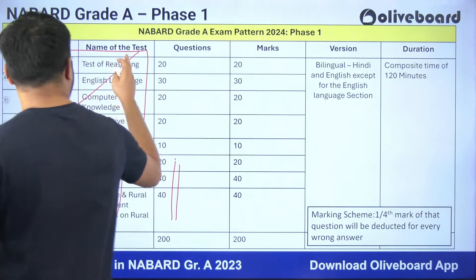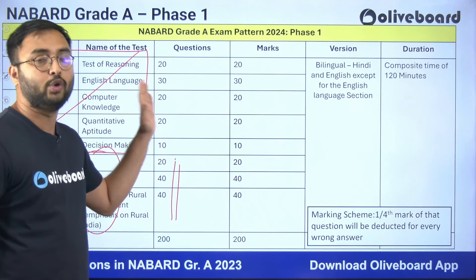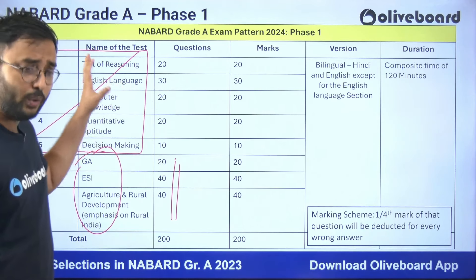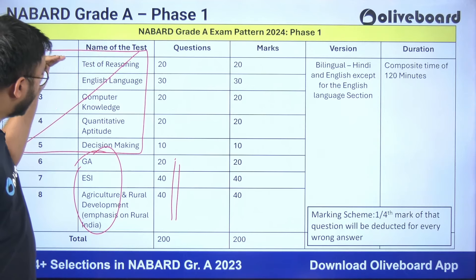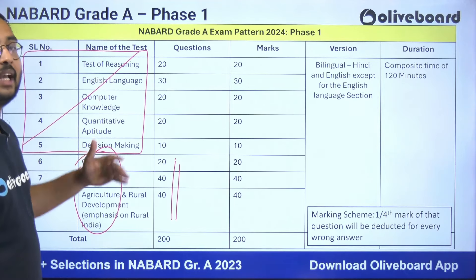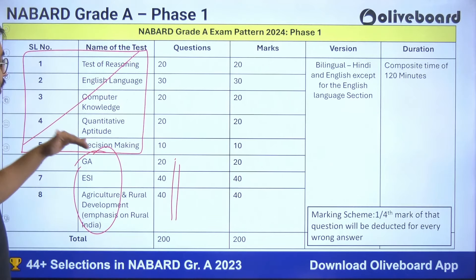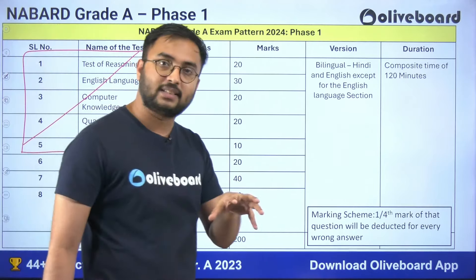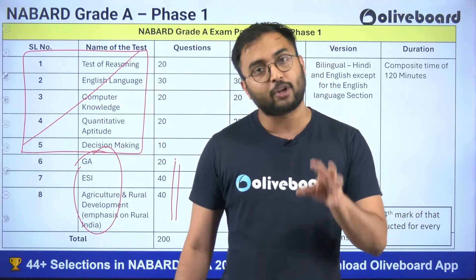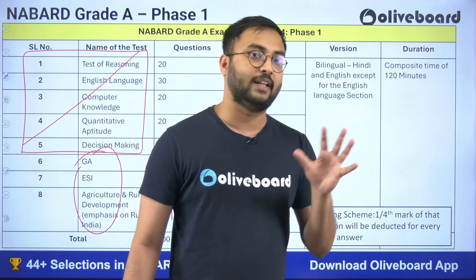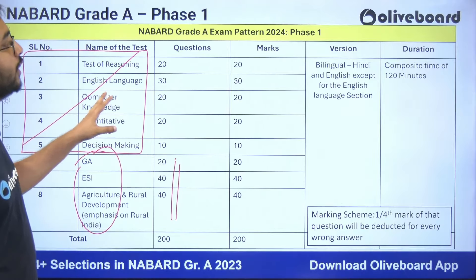When it comes to qualifying sections — reasoning, English, computer knowledge, quant, and decision making — the cutoffs for the last three years are very easy to clear. You just have to give equal weightage and dedication to each of these sections. You cannot concentrate heavily on one and ignore the others. All of these sections are very important. For example, in 2020, many students ignored computer knowledge and the maximum number of students failed in computer knowledge. Computer seems easy but it can actually cause you to fail Phase 1.